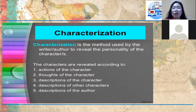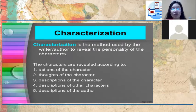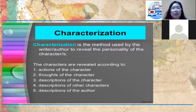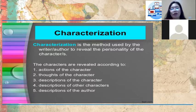Authors and writers use a method called characterization to reveal the personality of characters. Characterization is the method used by the writer or author to reveal the personality of the characters. Characters are revealed through: the actions of the character, the thoughts of the character, descriptions of the character, descriptions by other characters, and descriptions by the author.